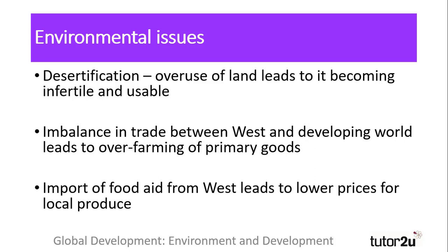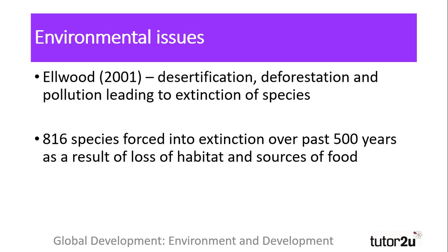This ultimately leads to driving them out of business, or making their land unusable. Elwood highlights a further environmental issue caused by a combination of pollution, desertification and deforestation, and that is of species extinction. With the destruction of their natural habitat through deforestation and poisoning through increased pollution, or removal of food sources through desertification, it is estimated that over 816 species have been made extinct over the past 500 years. The average rate would be one species per four years, but at present rates, 1.6 species become extinct every year.